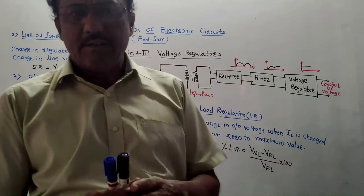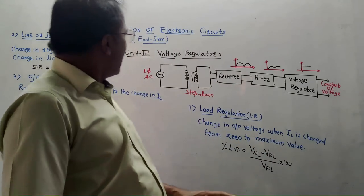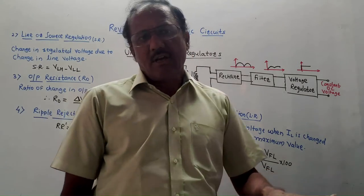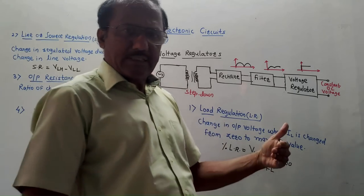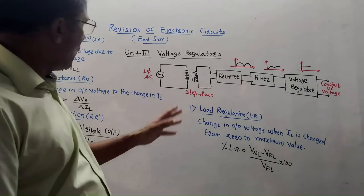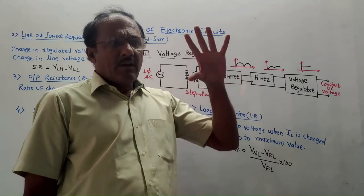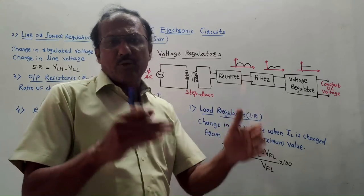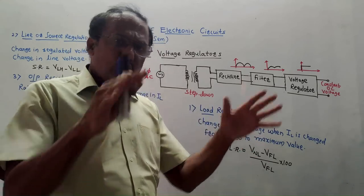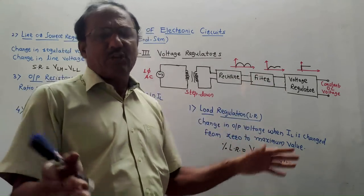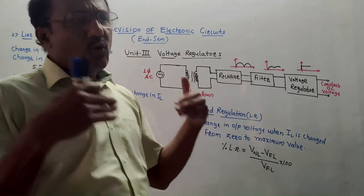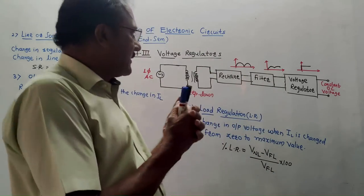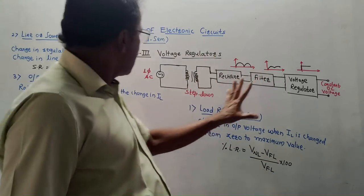Hello and welcome back to this channel. Today's topic is revision of electronic circuits for the ensign examination. I will be revising some important topics — basic topics related to unit numbers 3, 4, 5, and 6. There are so many diagrams in this subject, especially in units 4 and 5, but I will tell you simple tricks to memorize all the diagrams, along with a simplified approach to solve the numericals. So without wasting time, let us start the session.